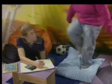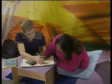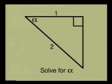Hayley approaches Wesley and says her teacher gave her a problem to solve for homework, but she doesn't know how to do it. The problem says: solve for alpha. Wesley looks at it and notes it looks like a normal right angle triangle, and wonders if they can use the trig they've learned so far. Do you know how to solve this problem?